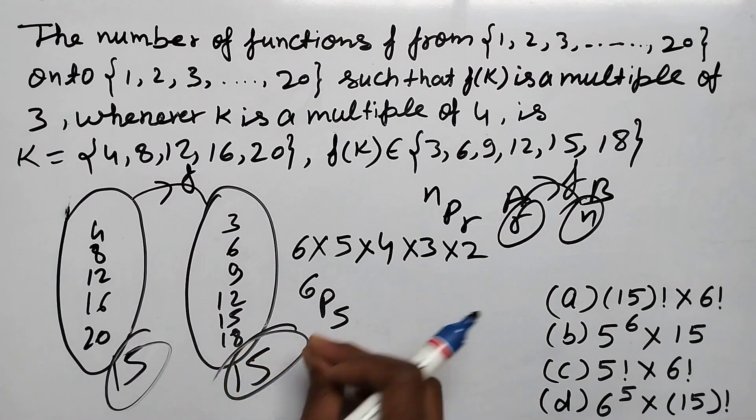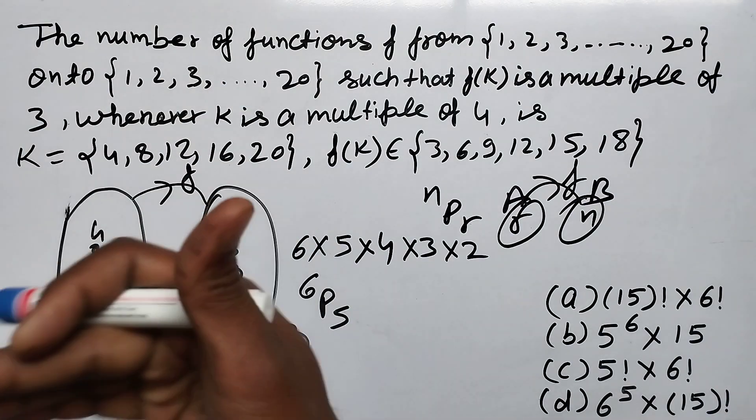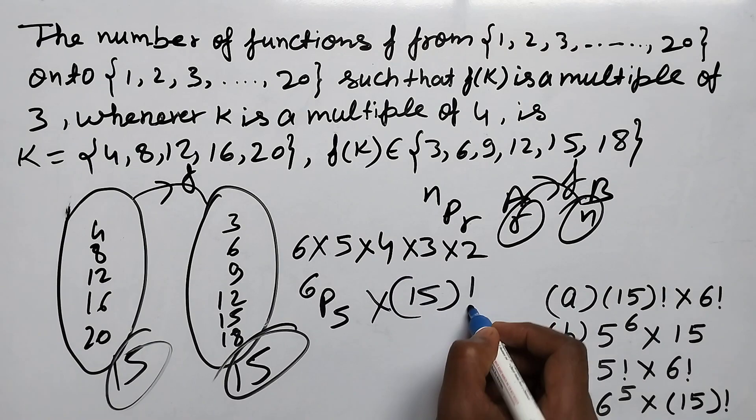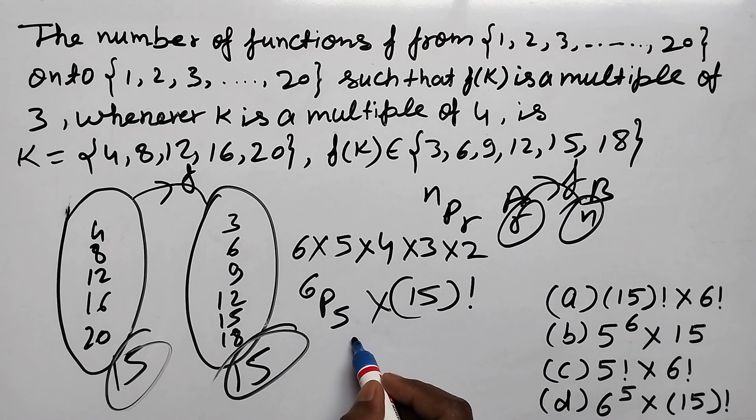This is the number of functions: factorial 15, 15 by 15 and 6 by 5, factorial 6 into factorial 15.